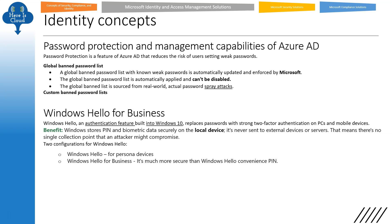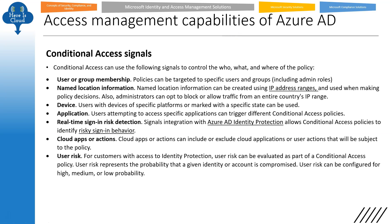Windows Hello for Business — the key benefit is that it stores PIN and biometric data securely on the local device, so it is never sent to an external device or server. That means no single collection point that an attacker might compromise. There are two configurations: Windows Hello for personal devices, and Windows Hello for Business which is much more secure and used for official/organizational use.